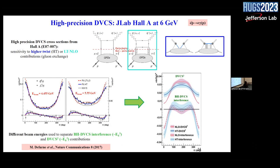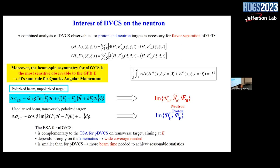Other measurements at Hall A helped understand higher-twist and next-to-leading-order processes. The precision of Hall A cross-section and cross-section difference data was sufficient to discriminate between hypotheses of dominance of NLO versus higher-twist terms. The data showed that at the low energies of JLab at 6 GeV, there is a sizable contribution from higher-twist diagrams and next-to-leading-order processes.